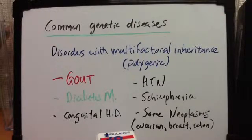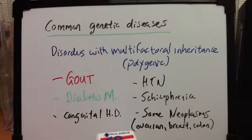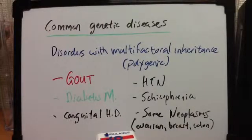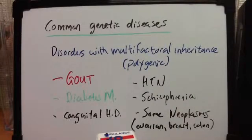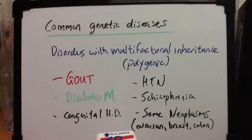These disorders often show familial occurrence. The probability of disease in first-degree relatives is about five to ten percent, and in second-degree relatives it is zero point five to one percent. This is very important, and we're going to talk about gout.